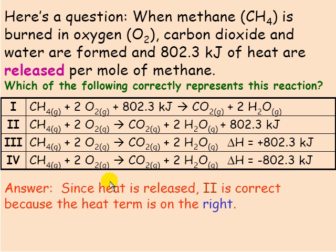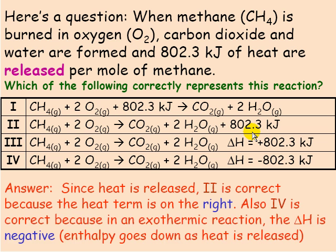Since heat is released, answer number two is correct because the heat term is on the right side of the arrow. Answer number four is also correct because the delta H is shown, and since this is an exothermic reaction releasing heat, delta H is negative.